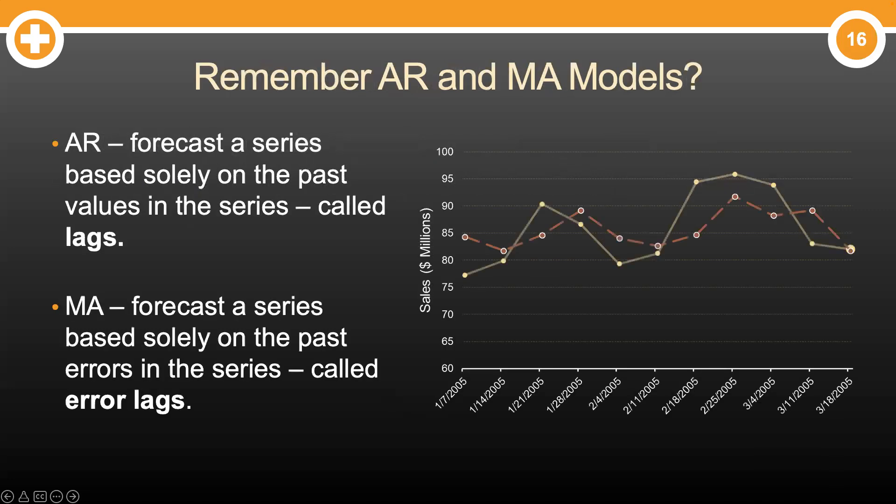First, we have to remember what AR and MA models are. If you forgot, you can check out the videos by clicking on the information circle in the upper right-hand corner. Of course, if you don't want to miss these videos in the future, you can click subscribe in the lower right-hand corner. Marketing at its finest. Remember that AR models forecast a series based solely on the past values of the series, called lags. MA models, on the other hand, forecast a series on past values of the errors in the series, called error lags.